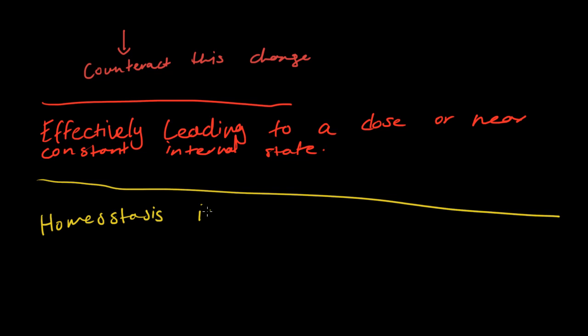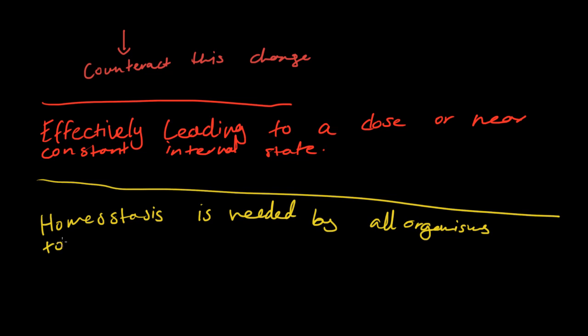Overall, homeostasis is needed by organisms to ensure that the internal state is optimal and allows for optimal functioning.